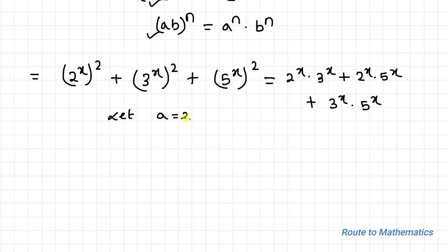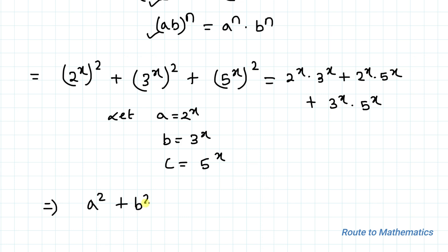In the next step, let's consider a = 2 to the power x, b = 3 to the power x, and c = 5 to the power x. Substituting a, b, c in the above equation, we have: a² + b² + c² = ab + ac + bc.